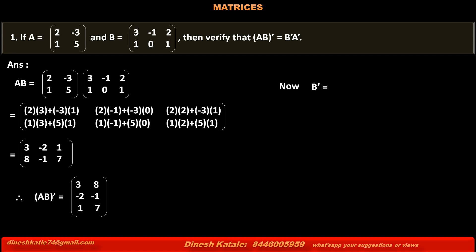Matrix B' is the transpose of matrix B, obtained by interchanging rows of matrix B into columns. Its first column is 3, -1, 2 which is the first row of matrix B, and second column is 1, 0, 1 which is the second row of matrix B, having order 3×2. Matrix A' is the transpose of matrix A, obtained by changing rows of matrix A into columns. That is, first column is 2, -3 which is the first row of matrix A, and second column is 1, 5 which is the second row of matrix A.